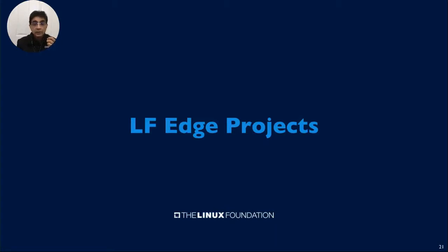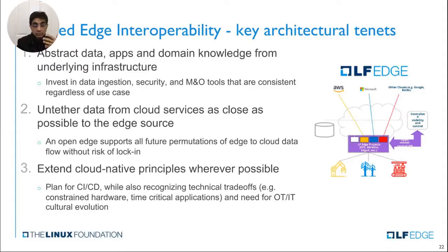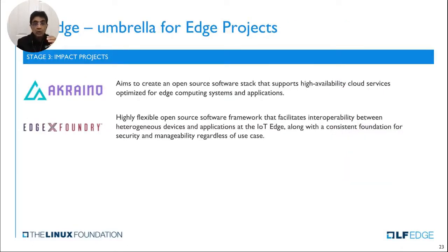The goal of all these projects is to abstract data, application, and domain knowledge from the underlying infrastructure — what I call the plumbing layer — to separate data from cloud services and allow for simplified APIs. Akraino is a stage three project, meaning it is a mature, widely deployed project with a large community. Akraino provides blueprints for use cases and deployments, and EdgeX is an IoT framework.